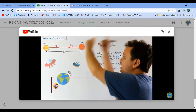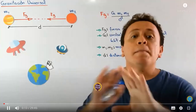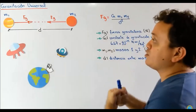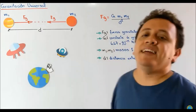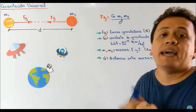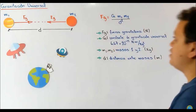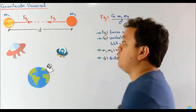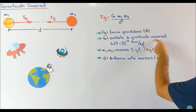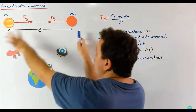En el video de hoy vamos a revisar el capítulo de gravitación universal, un capítulo que puede ser un poquito complicado, y por eso vamos a ir desarrollando todo paso a paso para que no quede ninguna duda. Vamos a recordar primero que Newton estableció que dos cuerpos cualesquiera experimentan una atracción mutua denominada fuerza gravitatoria o fuerza gravitacional. Tenemos aquí dos cuerpos: el primero de masa M1 y el segundo de masa M2. Estos dos cuerpos separados una distancia D se atraen con una fuerza denominada FG o fuerza gravitacional.